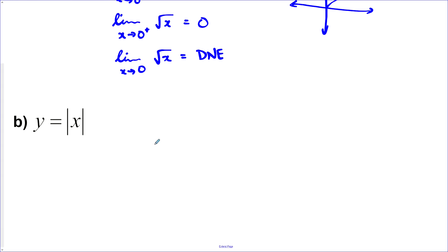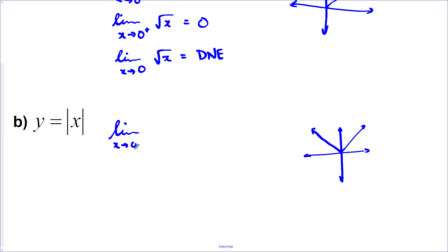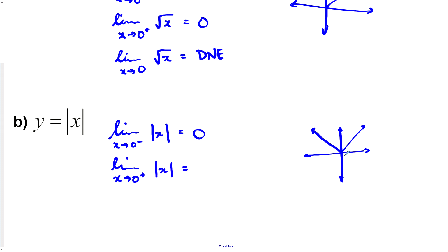y equals the absolute value of x. Let's give that a quick sketch — it has a vertex at the origin like this. So the limit as x approaches 0 from the left: coming from the left, we get closer and closer to 0. The limit as x approaches 0 from the right is also 0. And so the overall limit does exist in this case, and it is 0.